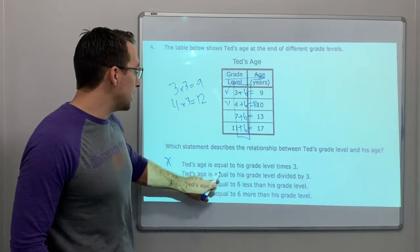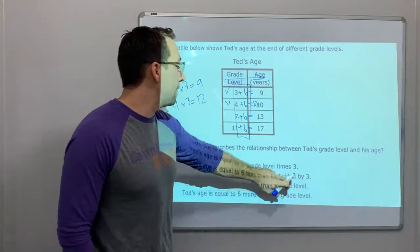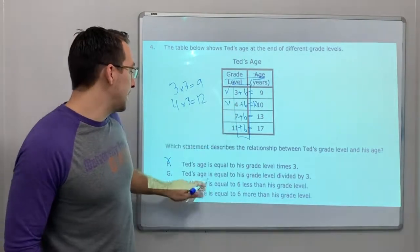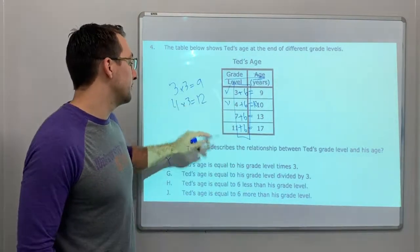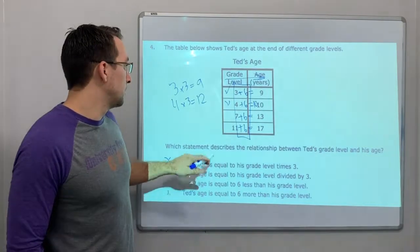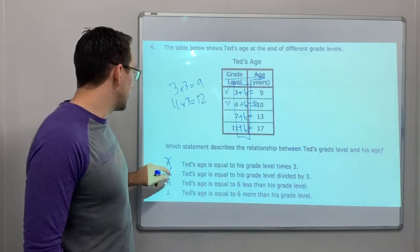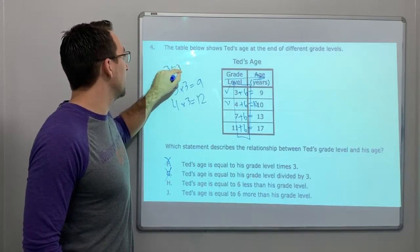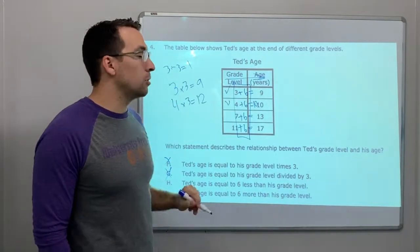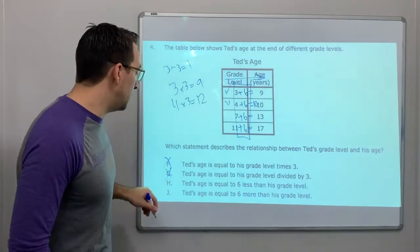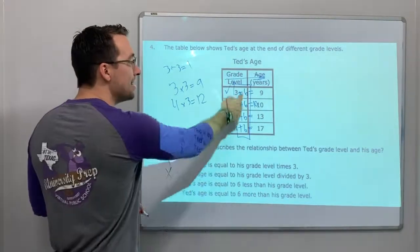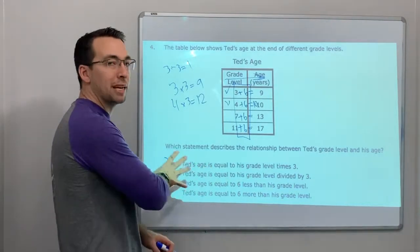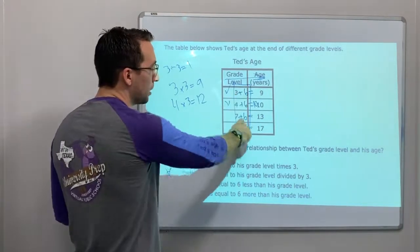Ted's age is equal to his grade level divided by 3. Look, grade level divided by 3? No. His grade level, no, that's wrong. Because 3 times 3 is 9, 3 divided by 3 equals 1. He wasn't 1 years old, that's wrong. You see, I did the math before, so now the question's easier because I'm not getting confused, I'm not getting tricked, because I'm looking for plus 6.